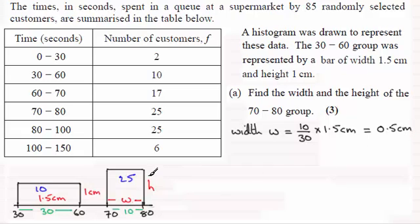Now as for the height H, what I know is that the frequency here 25 compared to 10 is 2.5 times more. And frequency is directly proportional to the area of the bar.